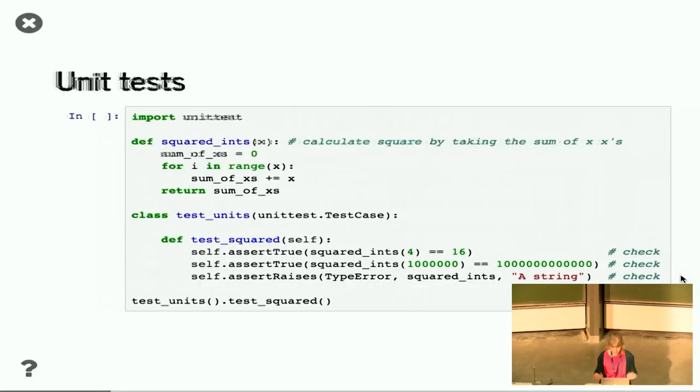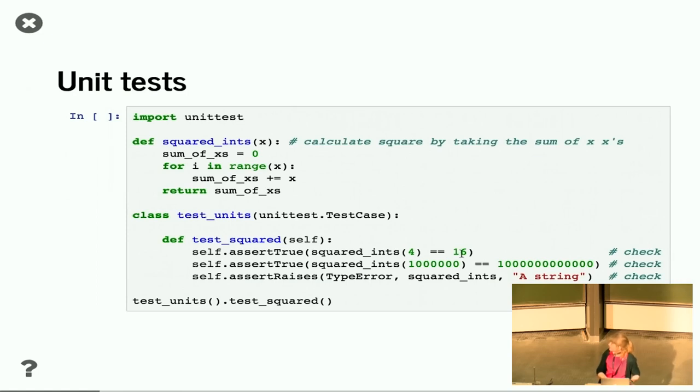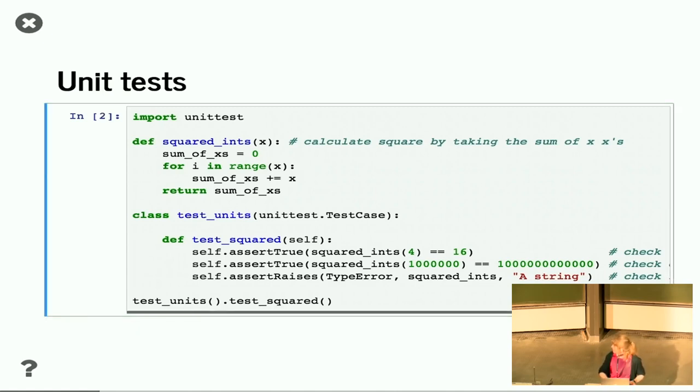So a little example. Okay, so here we've got a really stupid function to calculate the square of an integer. So essentially I'm going to take a number and add it to itself that many times. And I'm going to use unit test to run some tests on this. So I'm going to check that the square of four is 16, so that's like a normal case. I've then got a more extreme case, so I've got a larger number, check that that's right. And I'm also going to check that it raises an error. So if I pass in a string, it should raise a type error. So if I run this, then hooray, it has given me nothing out, which means it's worked.